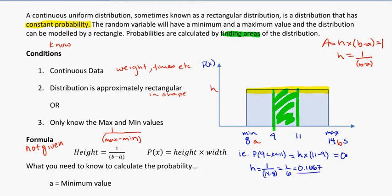So I'm going to have 0.1667 times 2, because 11 minus 9 is 2. And that again is the area of this shape in here.